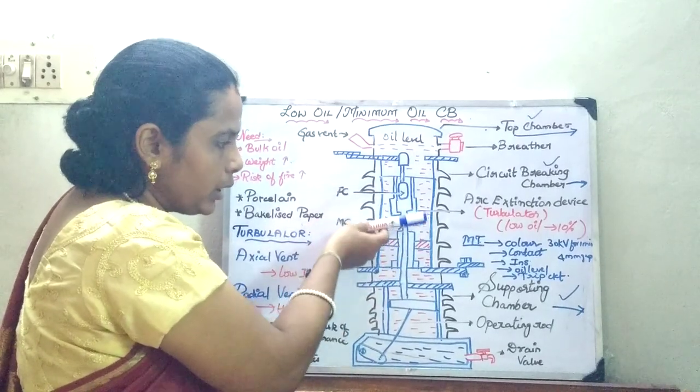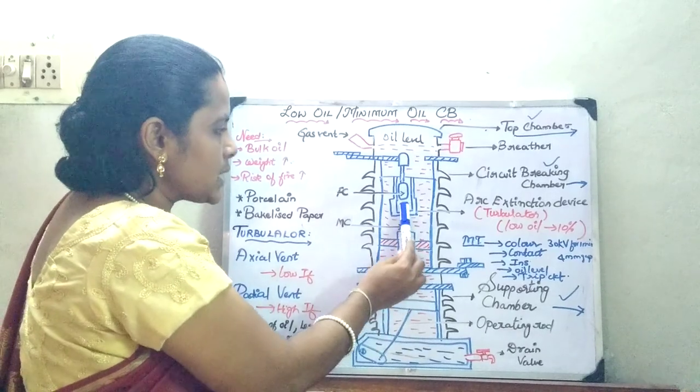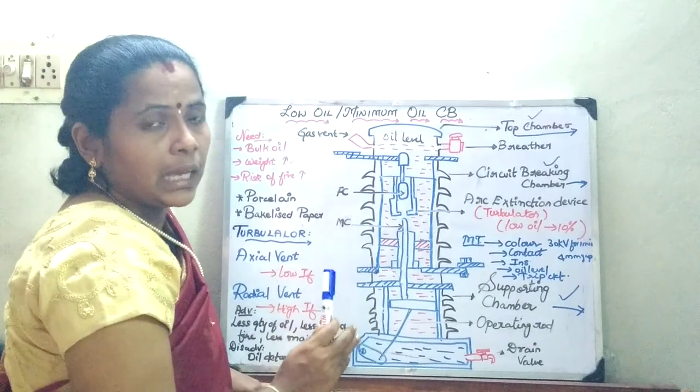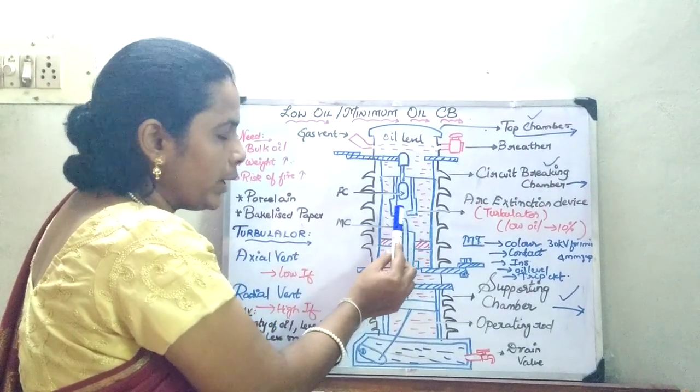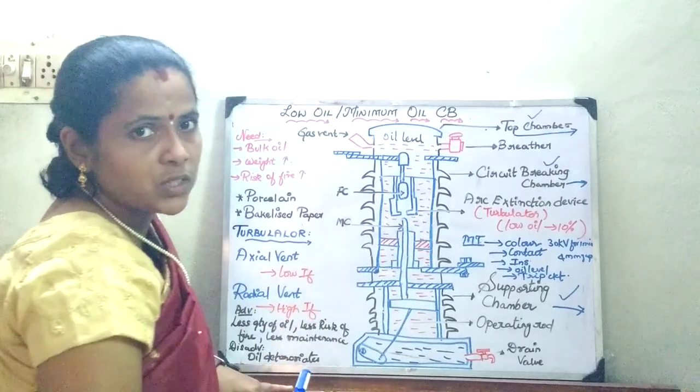As a result, this moving contact is going to be pulled down. In case of low fault current, this axial vent itself is sufficient enough to quench the arc. In case the fault is going to be higher, then you are going to have a radial vent also which forces the oil from all the sides to quench the arc.